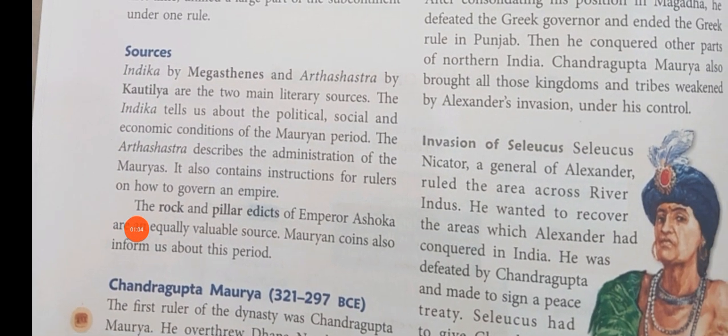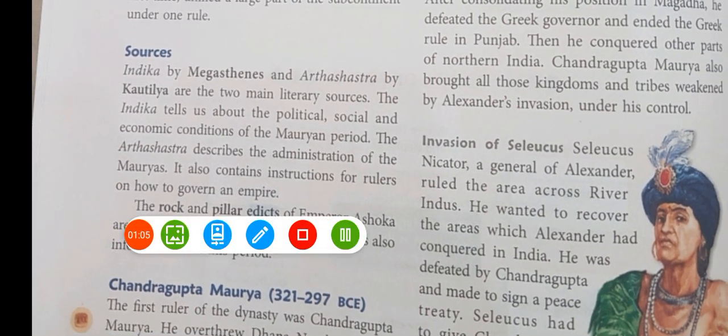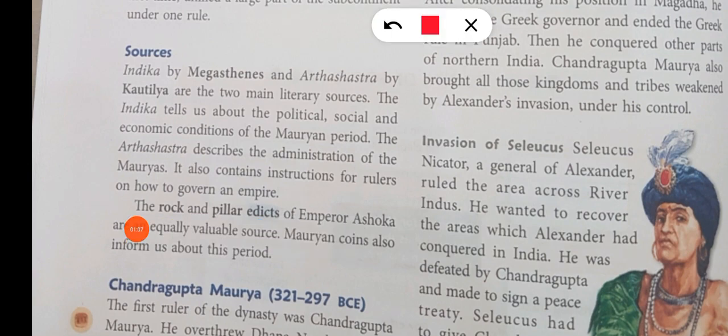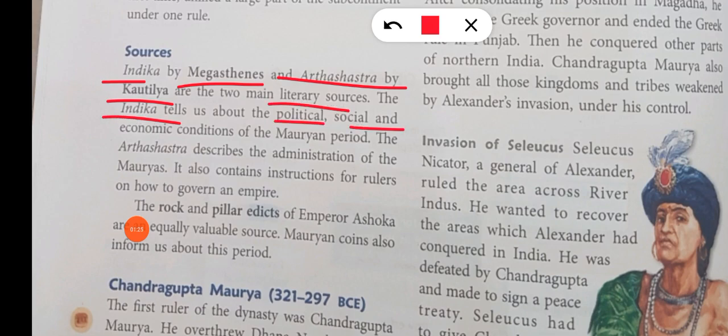Now, sources — from where do we know about the Mauryan dynasty? Two main books are there. First is Indica and another is Arthashastra. Indica is written by Megasthenes and Arthashastra is written by Kautilya. These are the two main literary sources. Indica tells us about the political, social, and economic condition of the Mauryan period.